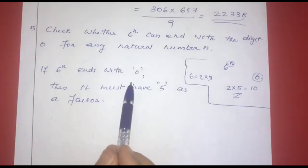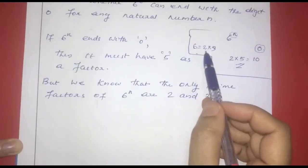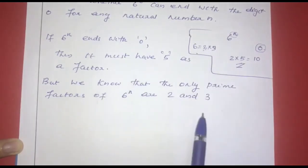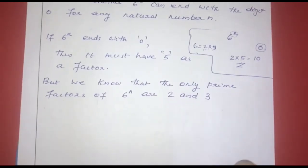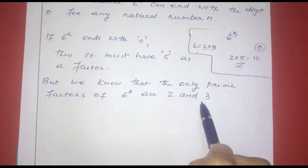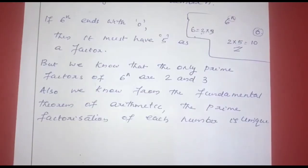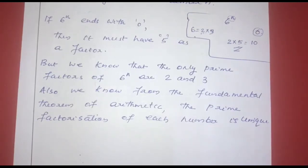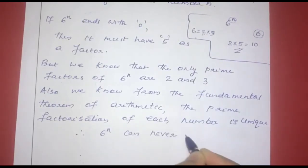If 6 raised to n ends with 0, it must have 5 as a factor. But the only prime factors of 6 raised to n are 2 and 3. By the fundamental theorem of arithmetic, the prime factorization of each number is unique. Therefore, 5 is not a factor of 6 raised to n, and 6 raised to n can never end with 0.